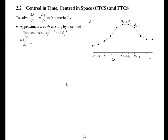Next, we're going to derive the centred-in-time, centred-in-space scheme, and also the forward-in-time, centred-in-space scheme. For centred-in-time, centred-in-space — here's the linear advection equation — we're going to approximate d phi by dt at time t_n using centred differencing, using time levels n-1 and n+1.